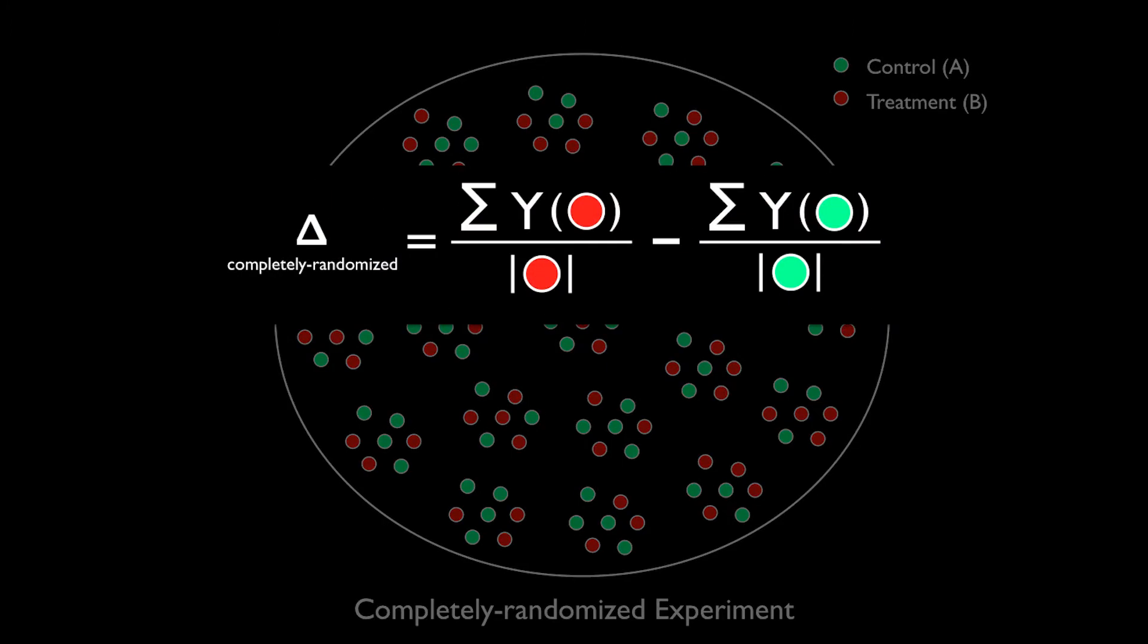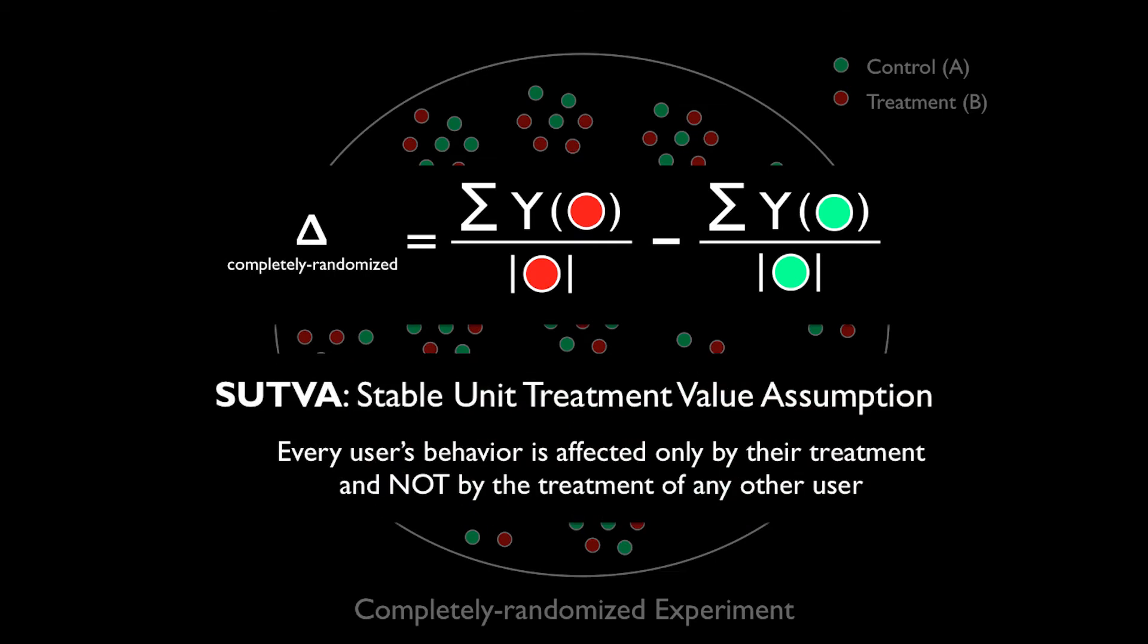We then compare the behavior between the users in the treatment and the control group. This comparison relies on the so-called SUTVA assumption, which states that behavior of every user is affected only by their own treatment, and not by the treatment of any other user. However, this assumption may not always hold, particularly when testing features on a social platform where users are, by design, connected to each other.